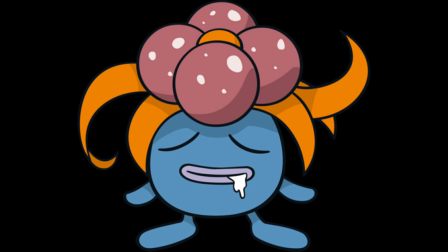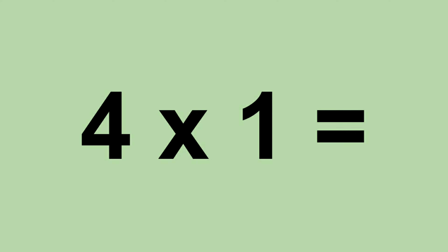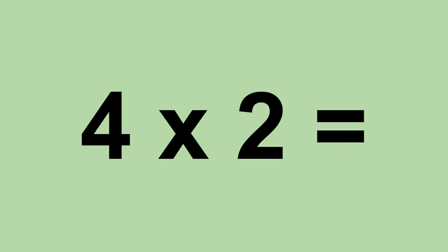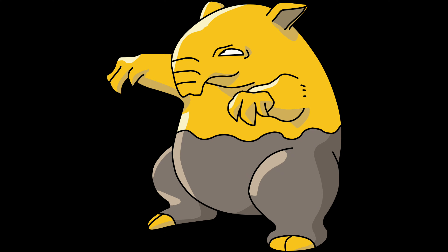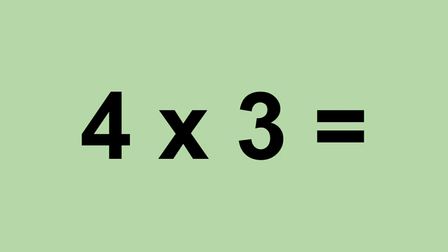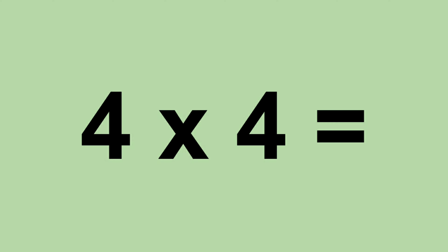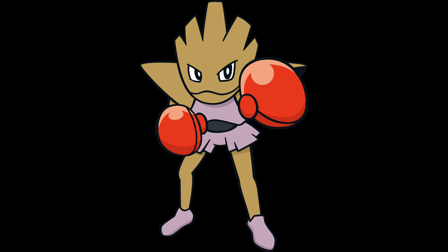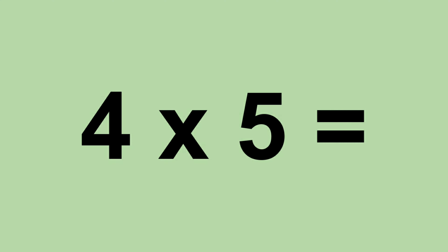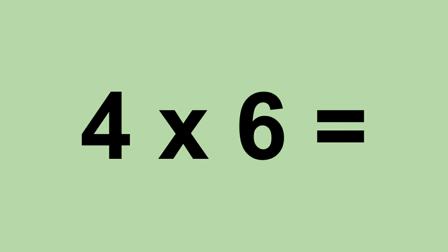Four times zero equals zero. Four times one equals four. Four times two equals eight. Four times three equals twelve. Four times four equals sixteen. Four times five equals twenty. Four times six equals twenty-four.